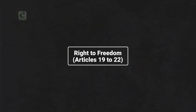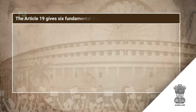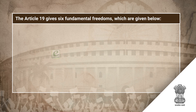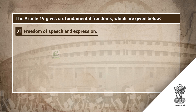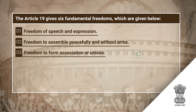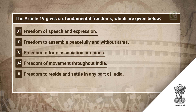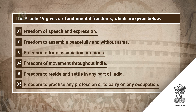Right to Freedom, Articles 19 to 22. Article 19 gives six fundamental freedoms: Freedom of speech and expression; Freedom to assemble peacefully and without arms; Freedom to form associations or unions; Freedom of movement throughout India; Freedom to reside and settle in any part of India; Freedom to practice any profession or to carry on any occupation.